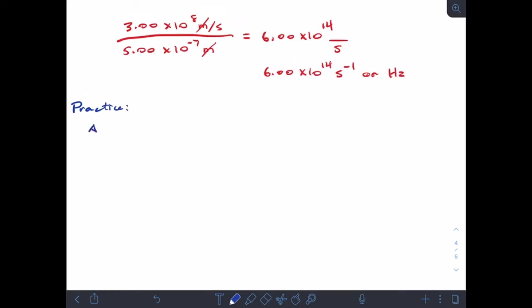In this problem, a photon has a frequency of 7.50 times 10 to the 14 hertz. Remember that hertz is the same thing as 1 over seconds or seconds to the minus 1. Our questions are: first, what is the wavelength? And second, what is the energy in joules?